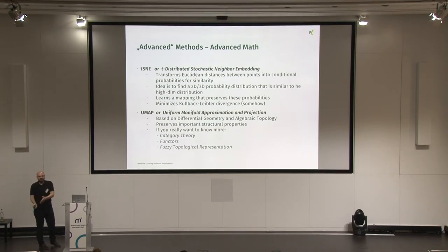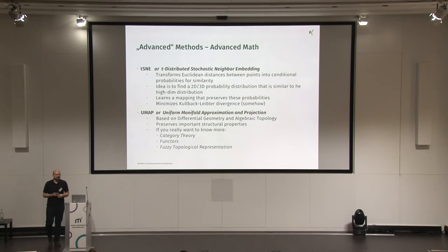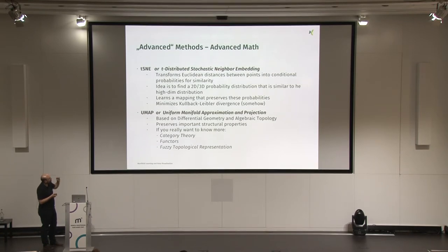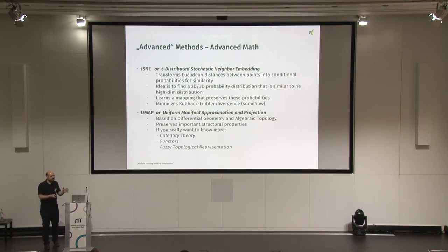t-SNE estimates conditional probabilities for your neighborhood and then tries to preserve these, using the Kullback-Leibler divergence — just a way to measure the difference between probability distributions. In the final representation, even though it looks like Euclidean space when printed in 2D or 3D, distances do not matter in the traditional sense. Angles do not matter. You cannot say a distance of 2 has a specific meaning relative to a distance of 1. But of course distances mean something — they indicate whether points are separated or not in the same neighborhood.